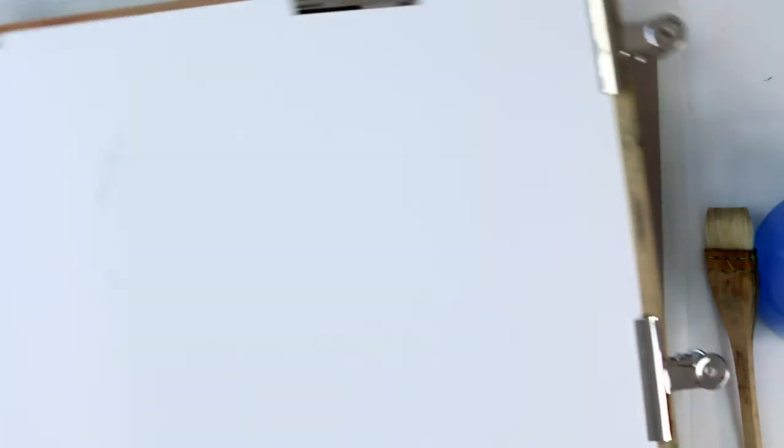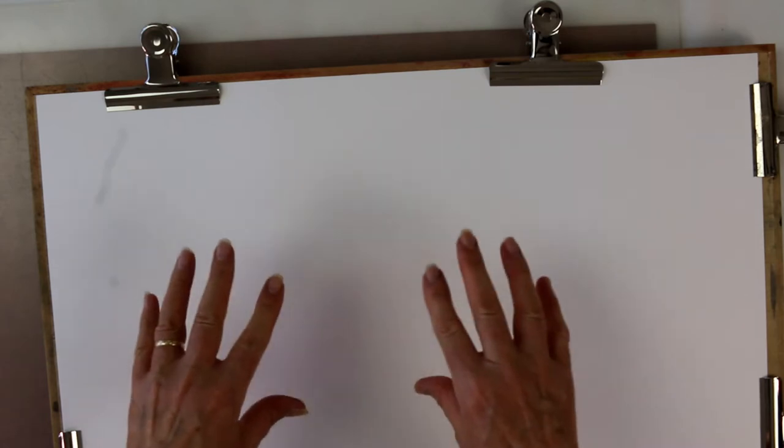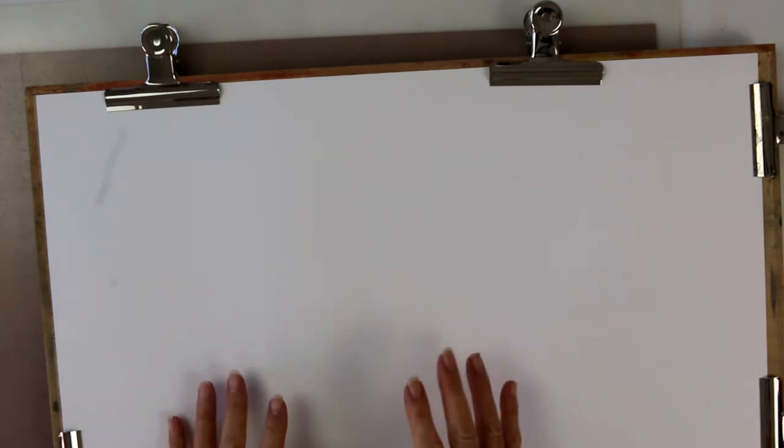Now, I'll show you what I do. Here's a board and a piece of paper on it. Now, what I do is this is a dry piece of 100% cotton paper which, by the way, is the only sort of paper I ever use.